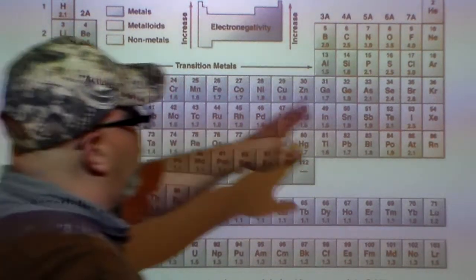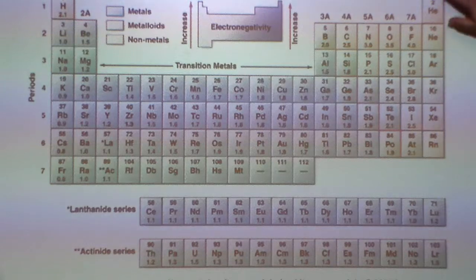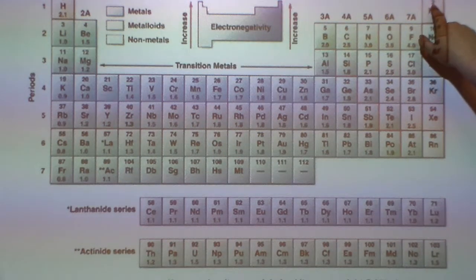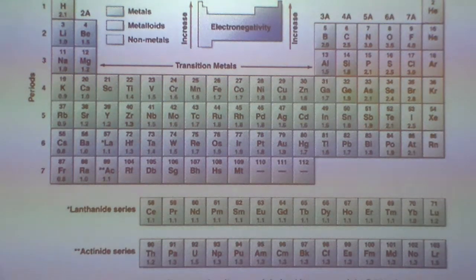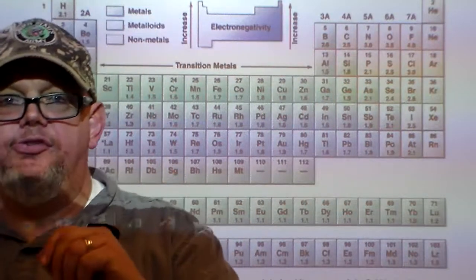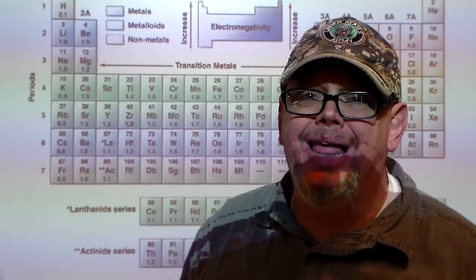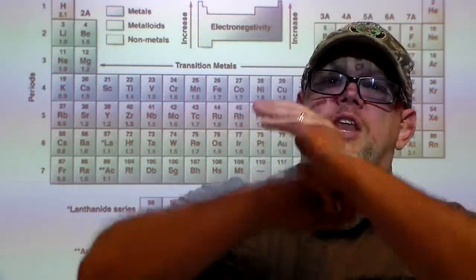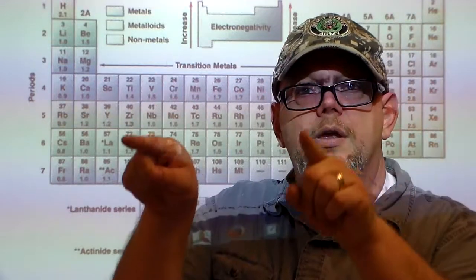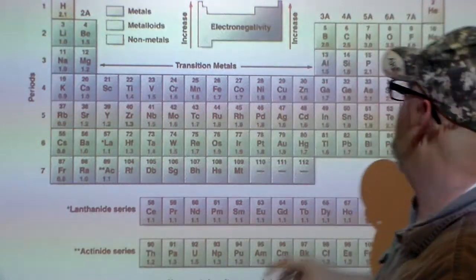This is the electronegativity table. On the right-hand side you may notice helium, neon, argon, krypton, xenon, and radon don't have a number value underneath — they're noble gases. They don't want any electrons, they don't want to give electrons, they don't want to share electrons, because they're happy. Their outermost layer of valence electrons is full. That's why we don't have a value here.